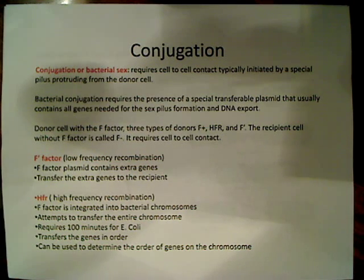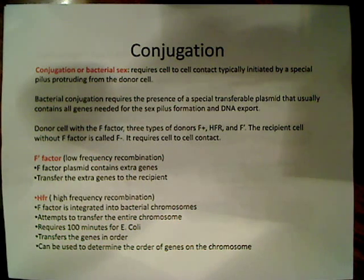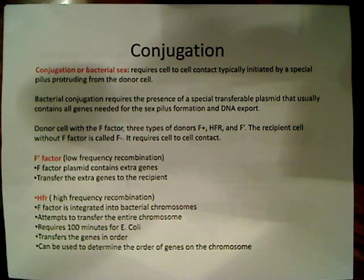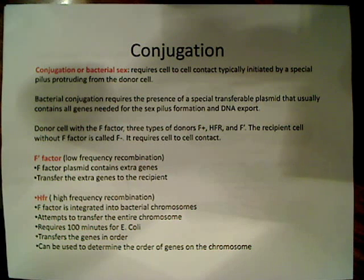Basically, it's a protrusion from the donor cell. The donor cell is called F-plus, and the recipient cell is called F-minus. This is just a general term. Bacterial conjugation requires the presence of this special transferable plasmid. It usually contains all the genes for making the sex pilus — for sex pilus formation and DNA export.